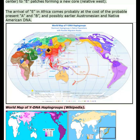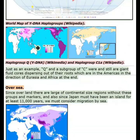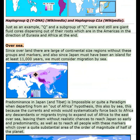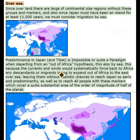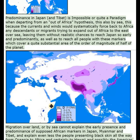Just as an example, Q and a subgroup of C were and still are giant fluid cores dispersing out of their roots in the Americas in the direction of Eurasia and Africa at the end. Since over land there are large continental-size regions without these groups and markers, and also since Japan must have been an island for at least 11,000 years, we must consider migration by sea. Predominance in Japan and Tibet is impossible or quite a paradigm when departing from an out-of-Africa hypothesis, because the currents and winds would systematically force back to Africa any descendants or migrants trying to expand out of Africa to the east over sea, leaving them without realistic chances to reach Japan so early and predominantly, nor to reach all people with these markers, which cover a substantial area of the order of magnitude of half of the planet.